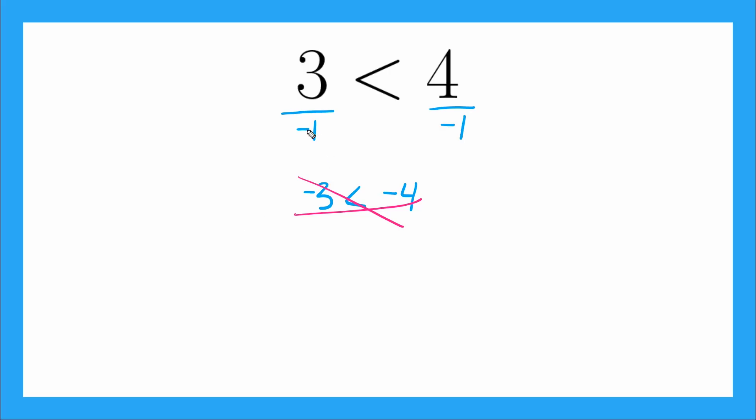So when we multiply or divide by those negative numbers, what I actually do is I'd have negative 3, negative 4, and I need to flip this sign around. So I'm actually going to say negative 3 is greater than negative 4. And that is true, right? Yeah, we know that that's true. So whenever we multiply or divide by negative numbers, we have to flip our inequality sign to keep the inequality true.